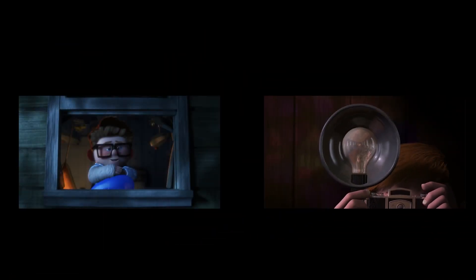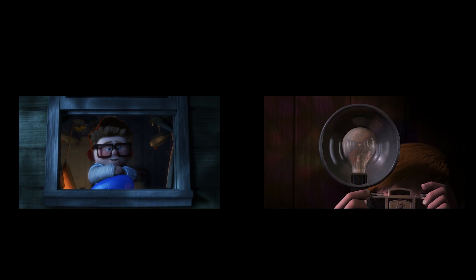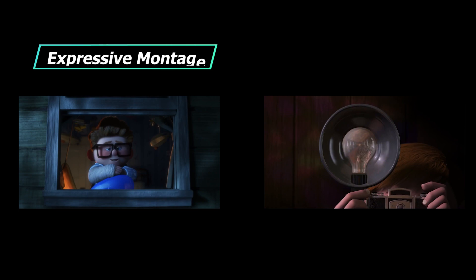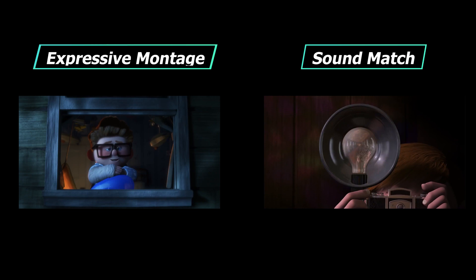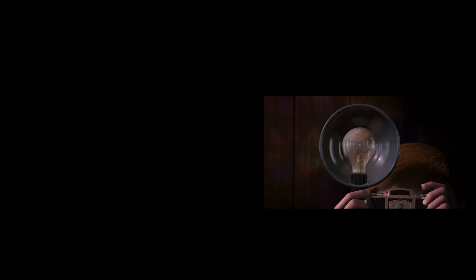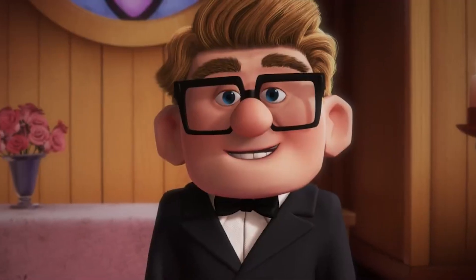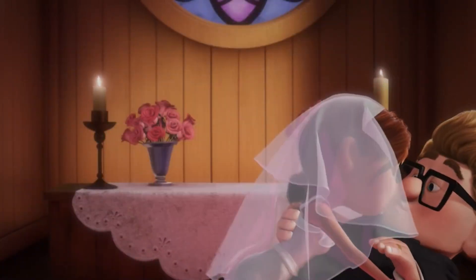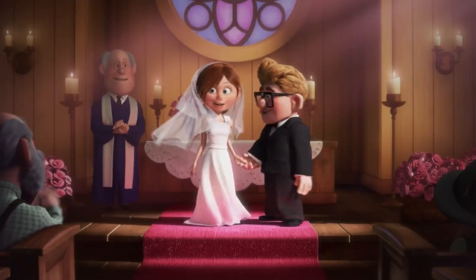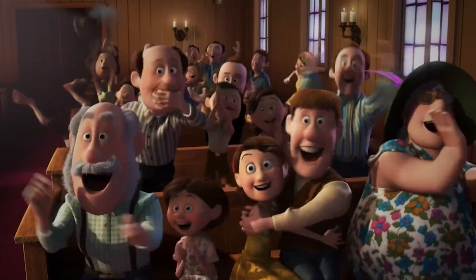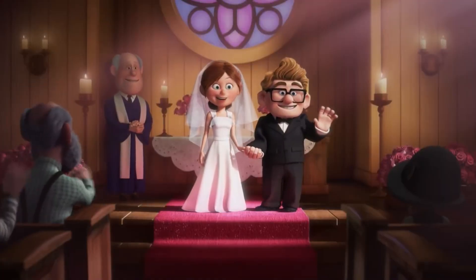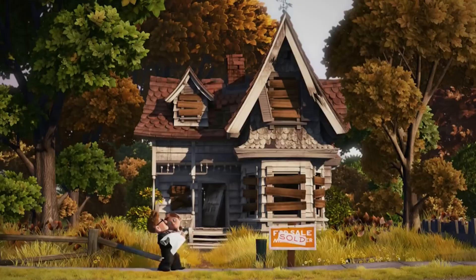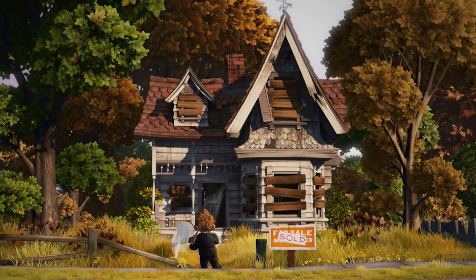The scene changes from the popping of balloons to the flashlights of the cameras. The director uses the techniques of expressive montage and a sound match to show the passage of time, as well as take the audience to the next scene naturally. The director uses four shots to show the wedding scenes, and uses comparative shots to show the difference in the personalities of Ellie and Carl's families. That's the magic of montage.